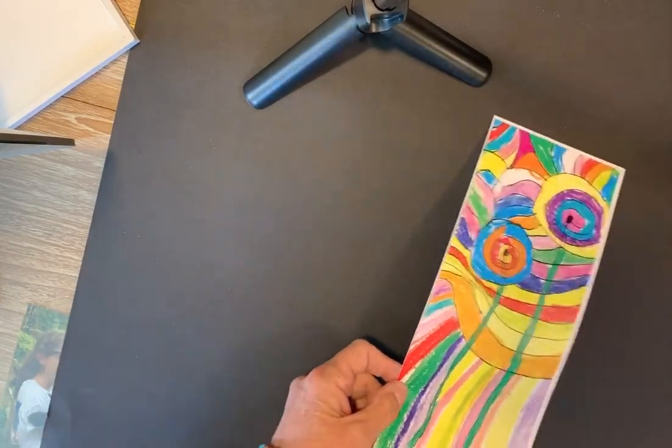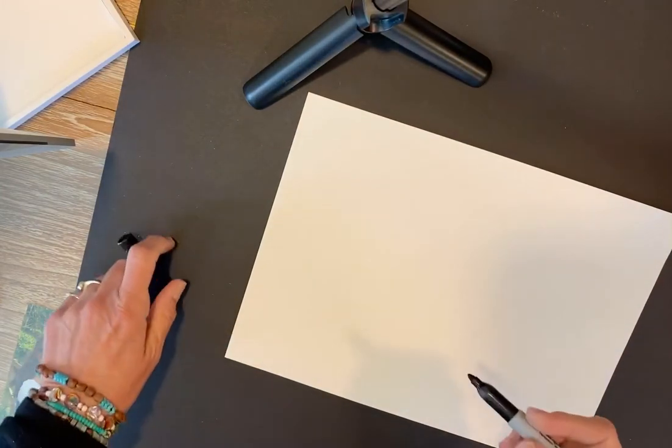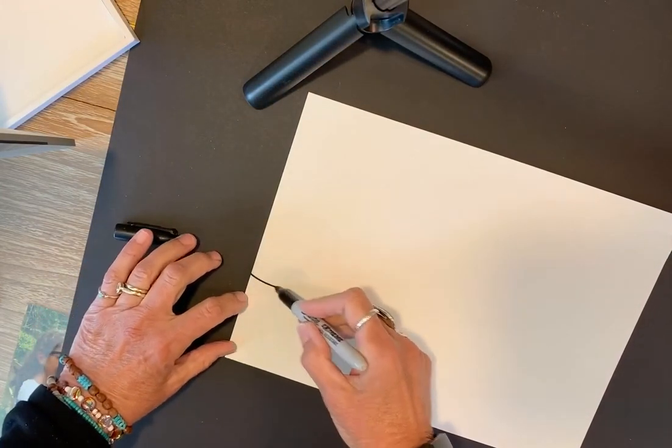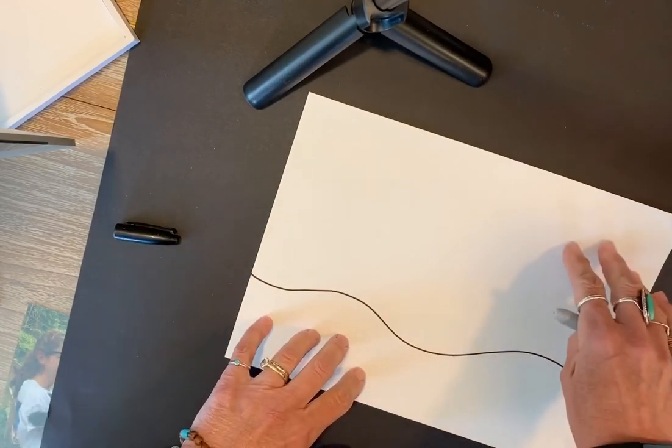So today I'm going to show you how to do these type of flowers. I hope you can see the paper. Again, we're going to make a wavy line here. It's going to be our horizon line. So this is the ground, and this would be the sky.